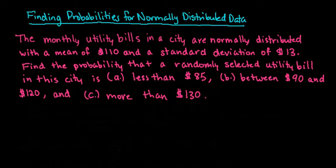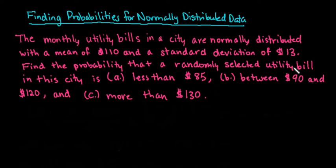Using the graphing calculators, you don't have to first convert to a z-score, but if you are using the table, you must always convert it to a z-score first. The monthly utility bills in a city are normally distributed with a mean of $110 and a standard deviation of $13. We are going to find the probability that a randomly selected utility bill is less than $85, between $90 and $120, and more than $130.